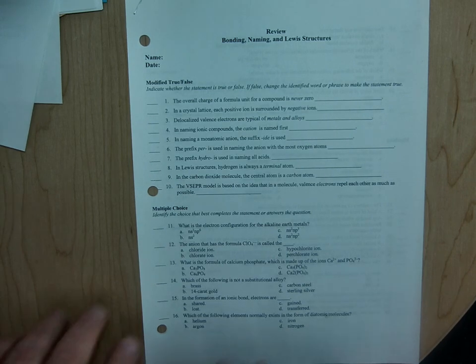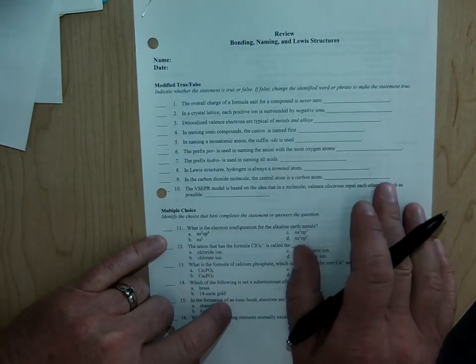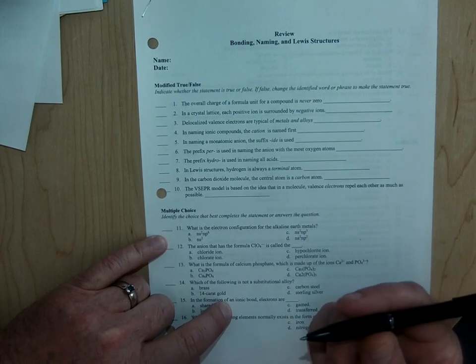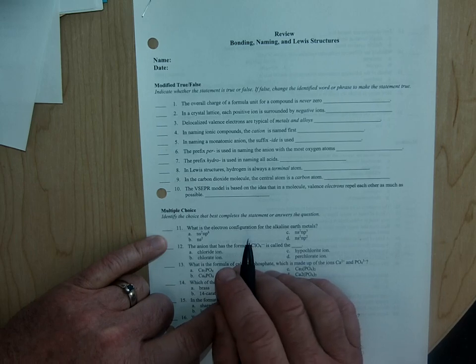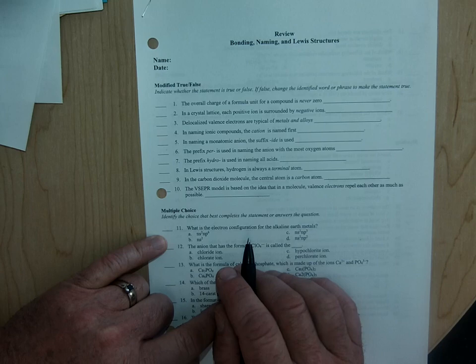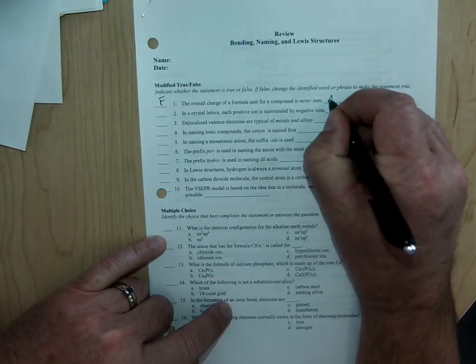All right, here it goes. So the overall charge on the formula unit for a compound is never zero. Actually, when you figure out what the formula is, like when you're figuring out the formula for an ionic compound, what you're trying to do is make the overall charge equal to zero. So that's false and it's always zero.